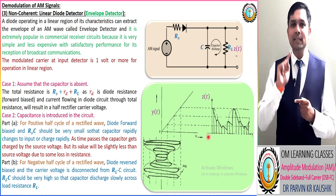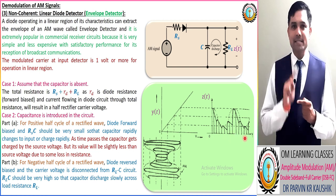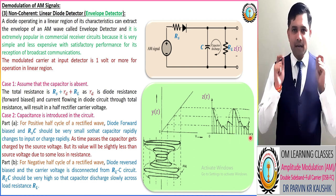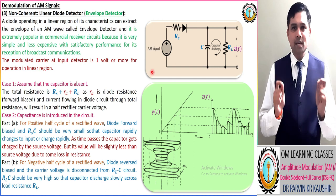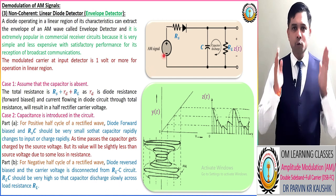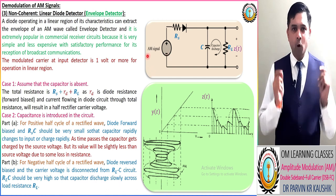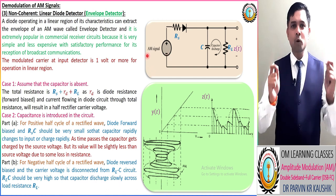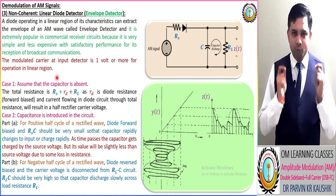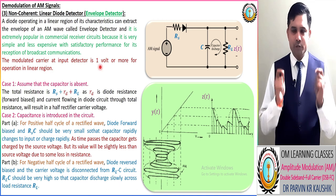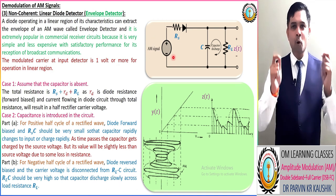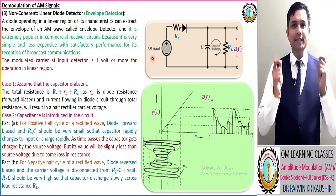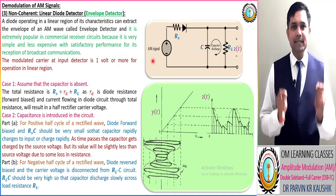For operating in the linear region, the input signal is equivalent to 1 volt or more than 1 volt, so that it can be operated in the linear region.